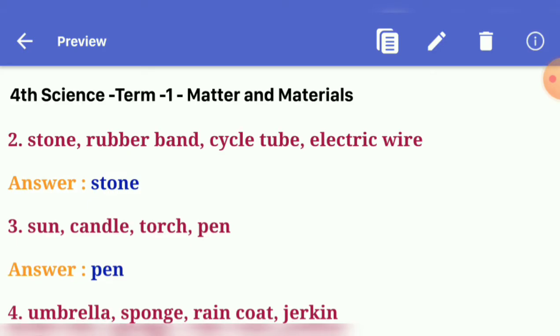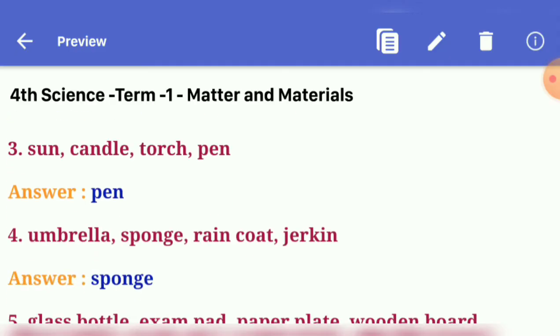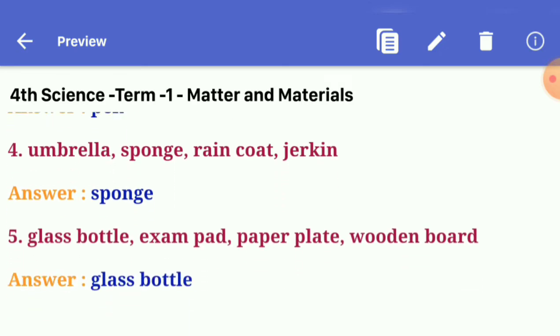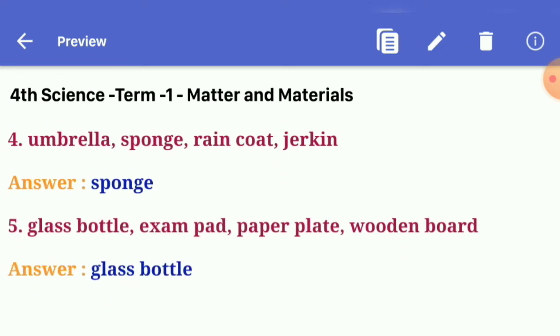Third one: sun, candle, torch, pen. Answer: pen. Fourth one: umbrella, sponge, raincoat, jerkin. Answer: sponge.